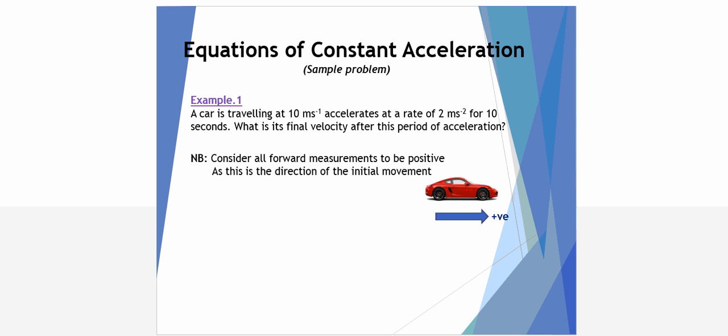Let's look at some examples. Example number one. A car is travelling at 10 metres per second, accelerates at a rate of 2 metres per second squared for 10 seconds. What is its final velocity after this period of acceleration? Because this vehicle is travelling in a forward direction, we'll consider that to be positive for all other variables that we measure or record. First of all, let's write down the variables, both known and unknown, one underneath the other.